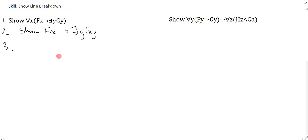Now from here, we just continue show line breakdown, and show line breakdown says the same thing. If it's a universal, you show an instantiation. If it's a conditional, you assume CD and you immediately show consequent. So in this case, nothing has changed.